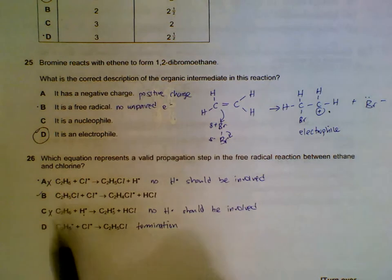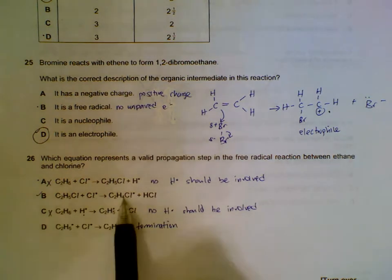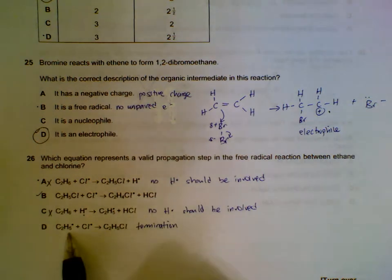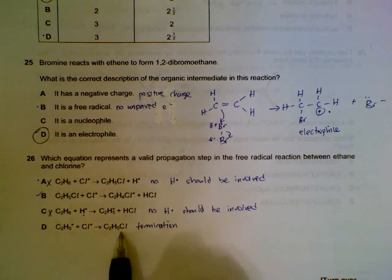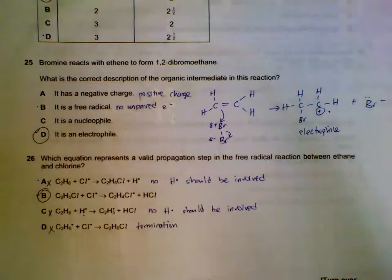We're down to B and D. Option B uses up one free radical and creates another free radical - this is propagation. Option D: two free radicals combine to get a non-free radical, this is actually termination. So answer is B.